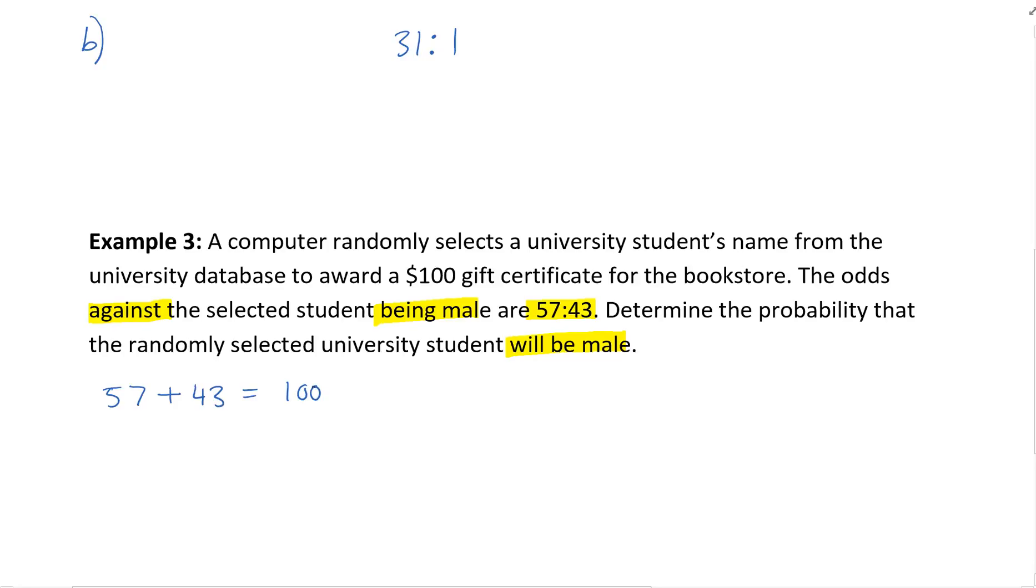That means for every 100 students, 43 are male and 57 are female. That doesn't mean there's a total of 100 students, but for every 100 students. If there are 200 students, all these numbers would double. It's just a ratio or percentage of the number of students.